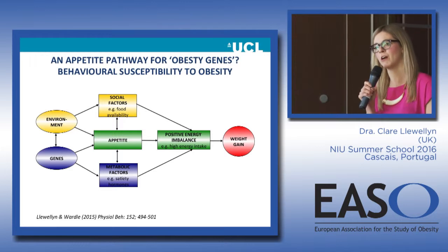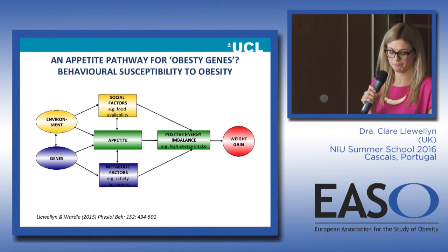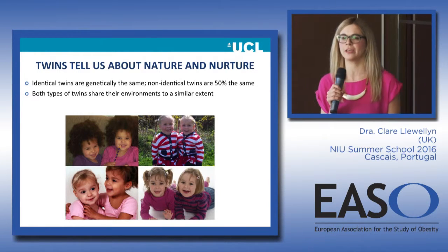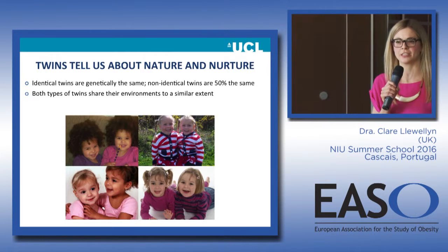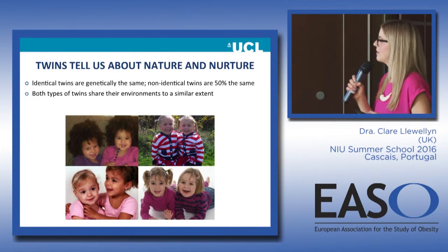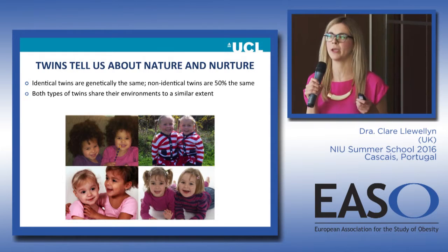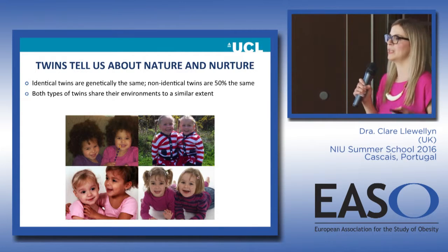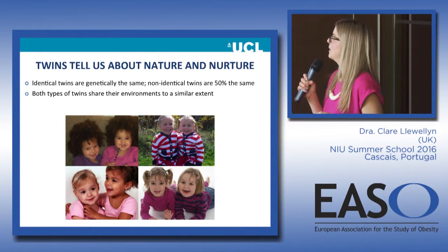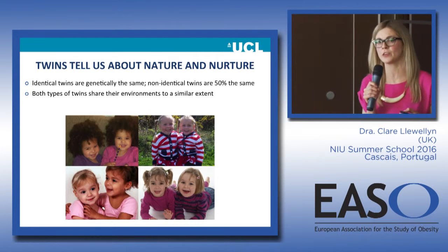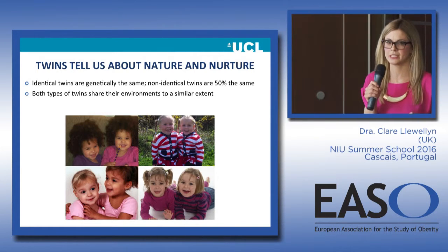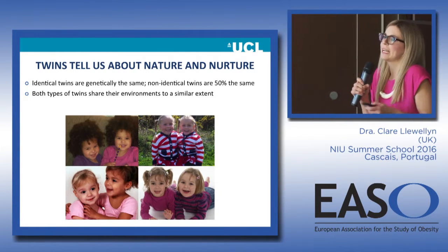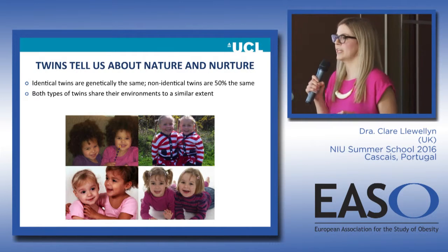This model also helps explain the seeming paradox of both genetic and environmental determination of weight. We've been studying twins to understand the extent to which appetite is under genetic control and to understand the extent to which they share a common genetic pathway. Twins are the perfect natural experiment because identical twins are genetic clones — 100 percent genetically the same — while non-identical twins are on average 50 percent genetically the same, exactly the same genetic relatedness as any normal sibling.